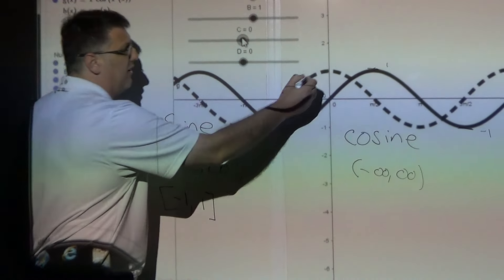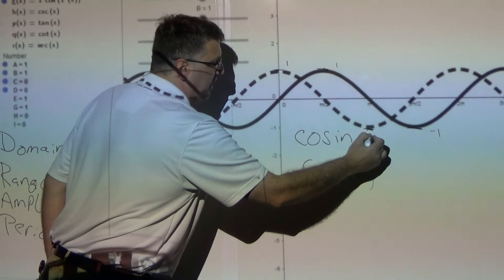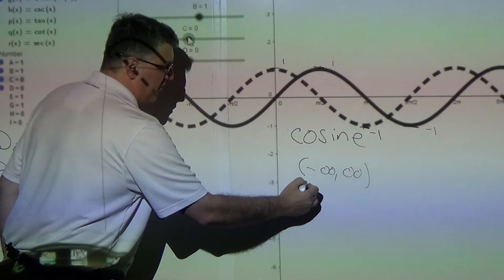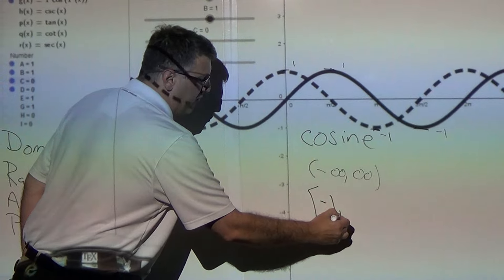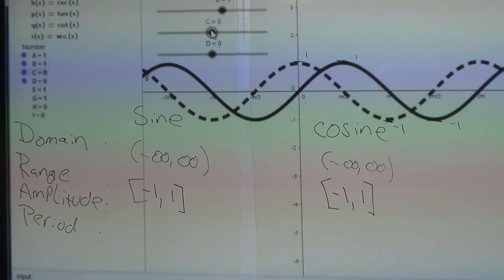And on cosine, it's still 1 and negative 1 and it still touches them. So the range is negative 1, 1. Same domain, same range.